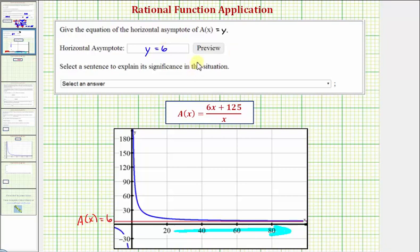The other way to determine the horizontal asymptote is to analyze the function. We can determine the equation of the horizontal asymptote by analyzing the degree of the numerator and denominator. Notice in this case, the numerator is degree 1, and so is the denominator.